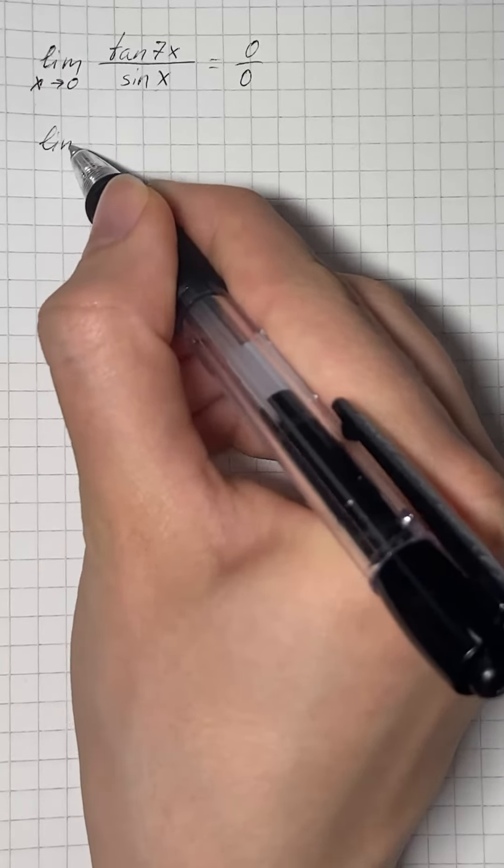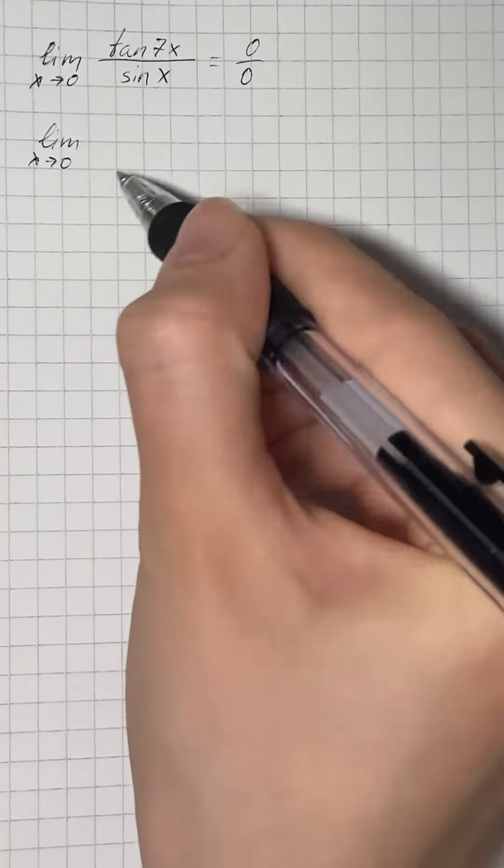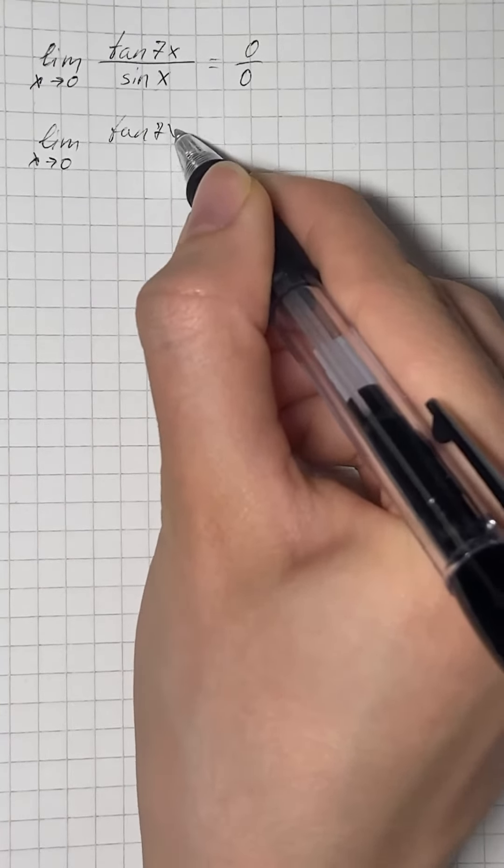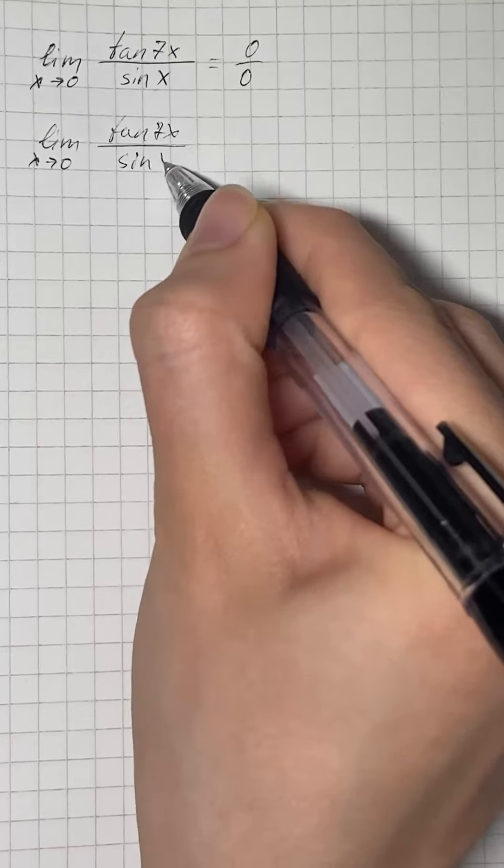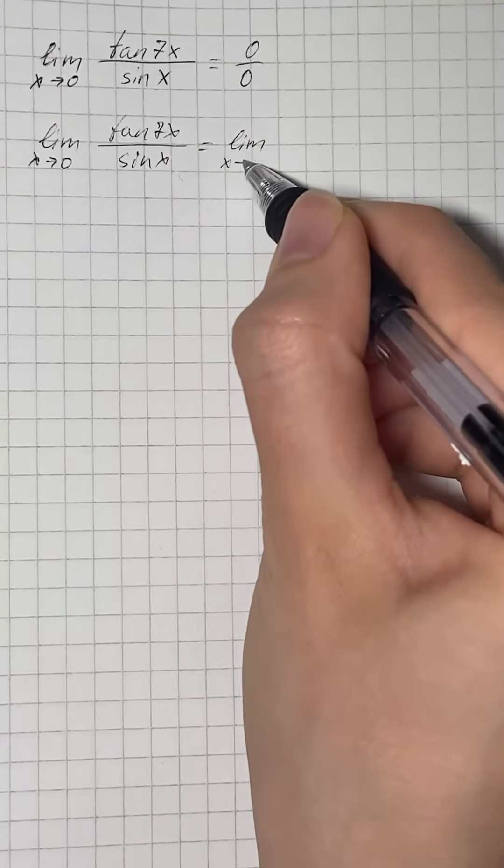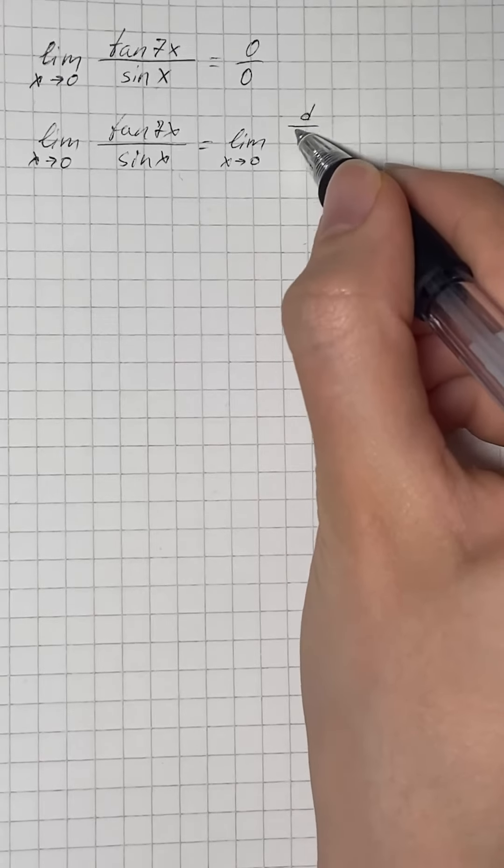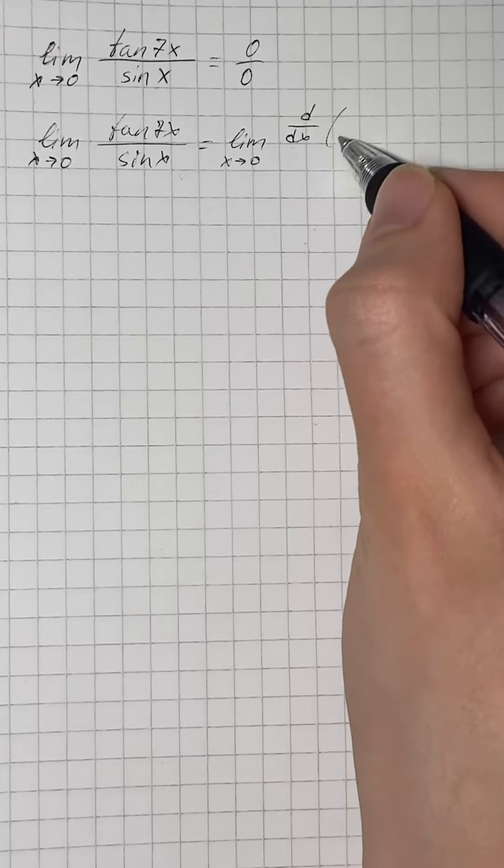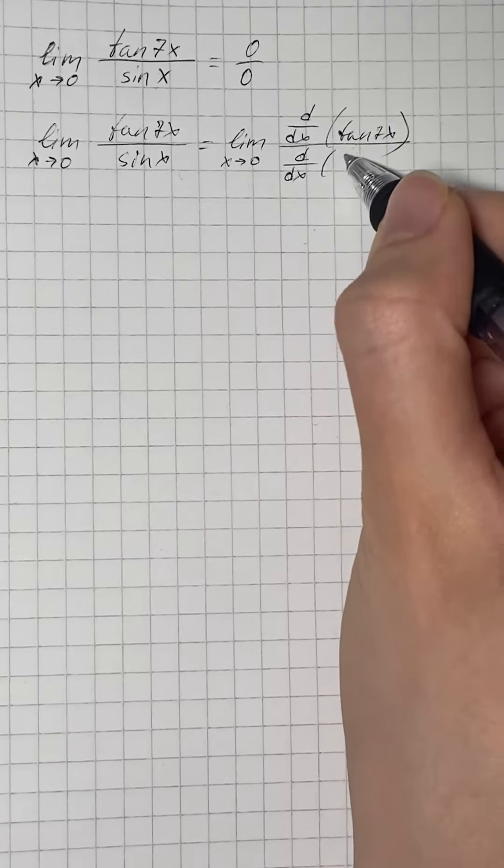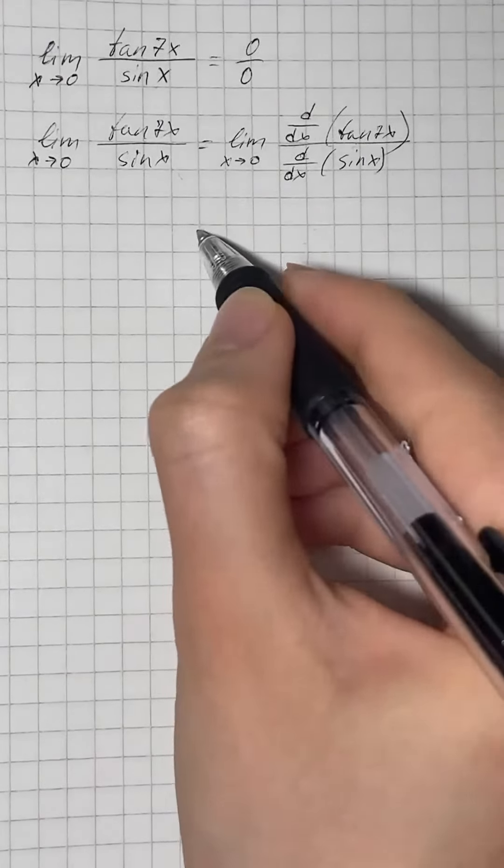That means that limit as x approaches 0 of tangent of 7x over sin of x equals limit as x approaches 0 of derivative with respect to x of tangent of 7x over derivative with respect to x of sin of x.